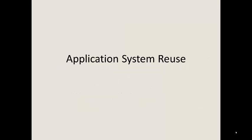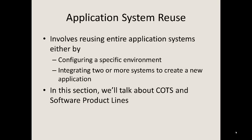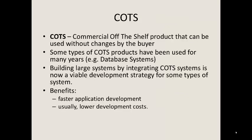Application system reuse involves reusing the entire application system. It can involve reusing the whole application by configuring it to a specific environment, or integrating two or more systems to create a brand new application. In this section we'll talk about COTS and product lines. COTS — commercial off-the-shelf products — can be used without changes by the buyer. Building a large system by integrating COTS is now a viable development strategy, usually resulting in faster application development and lower development costs.